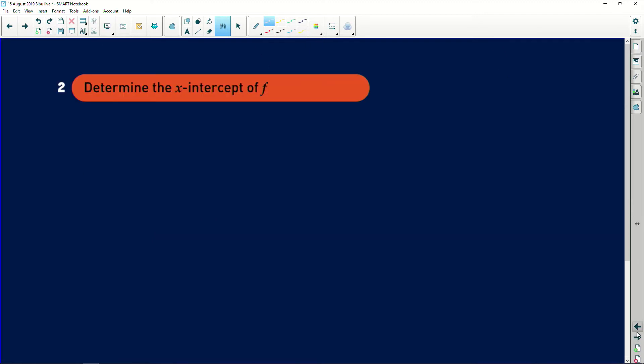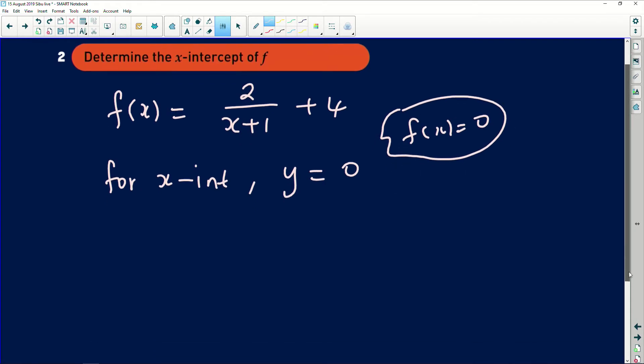The next part of the question says, determine the x-intercept of f. What is the graph of f? Well, f(x) = 2/(x+1) + 4. We're looking for the x-intercept. So for x-intercept, remember, for x-intercept, your y values have to be 0 or f(x) has to be 0. You can also put it in this form. This and that is basically the same thing.